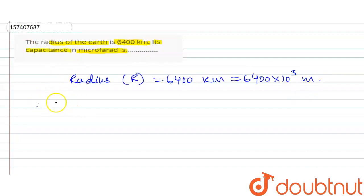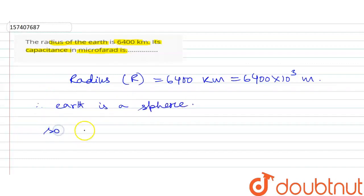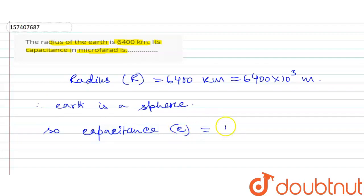The radius of Earth is 6400 km. Earth is a sphere, and for a sphere, capacitance is equal to 4 pi epsilon 0 into R.